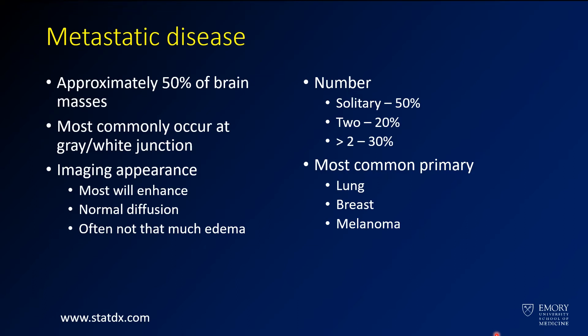Approximately 50% of brain masses are metastases. They usually occur at the gray-white junction. The vast majority often don't have that much edema. Approximately 50% of brain metastases are going to be solitary, meaning you'll have a single lesion — definitely something to keep in mind. The most common primaries for which you'll see brain metastases are lung, breast, and melanoma.